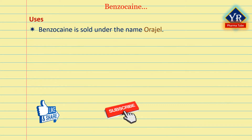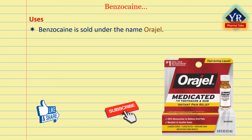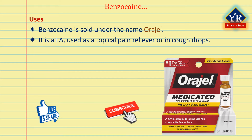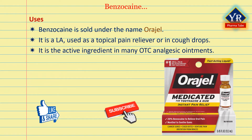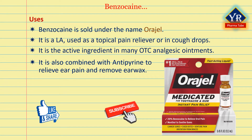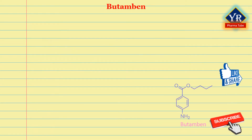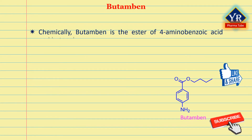Benzocaine is sold under the brand name Orajel. It is a local anesthetic drug commonly used as a topical pain reliever or in cough drops. It is the active ingredient in many OTC analgesic ointments. It is also combined with antipyrine to form otic drops to relieve ear pain and remove ear wax.